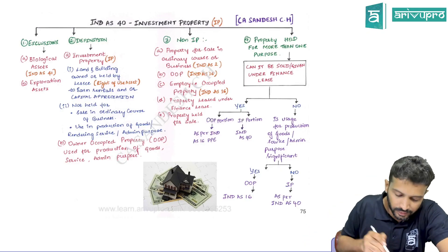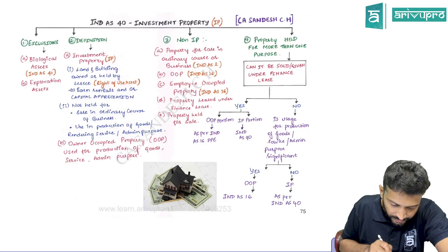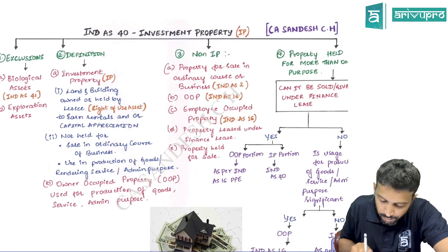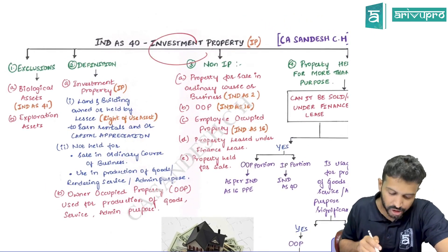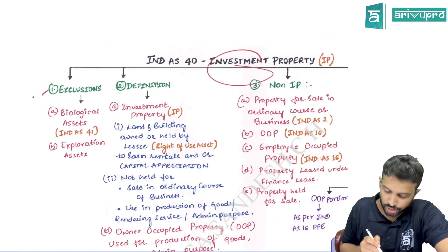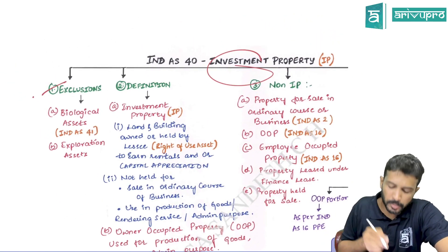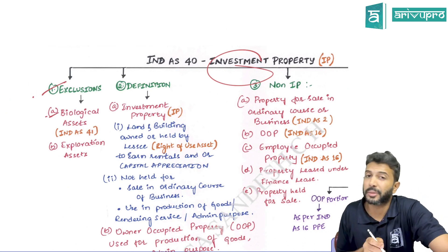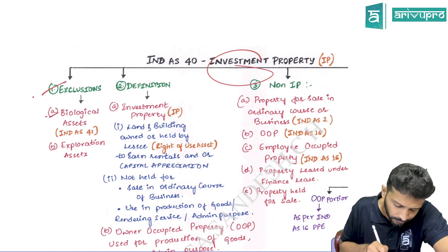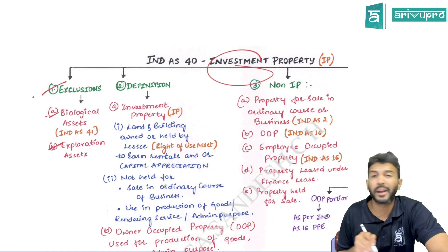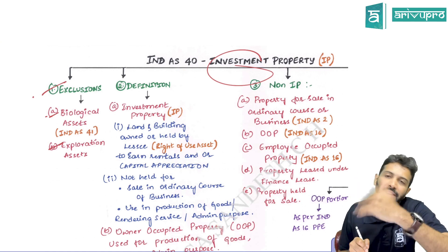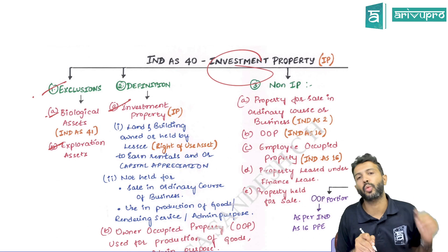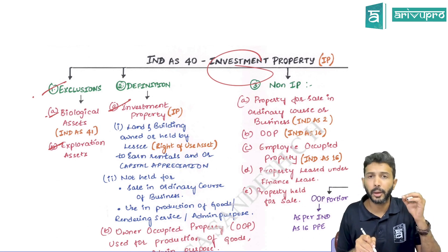Let's quickly revise Ind AS 40 Investment Property with the help of our summary chart. First, exclusions: investment property does not cover biological assets because we have a separate standard Ind AS 41 for it. It does not apply for exploration assets because we have Ind AS 106 for it.